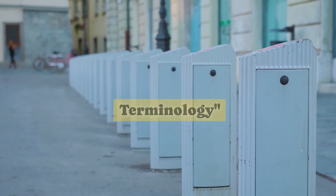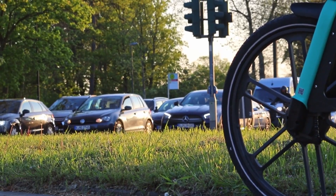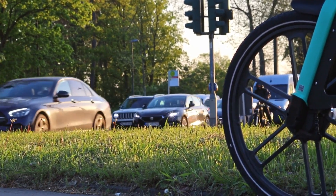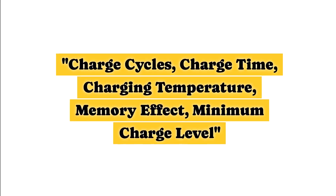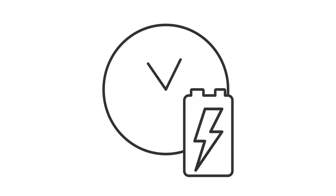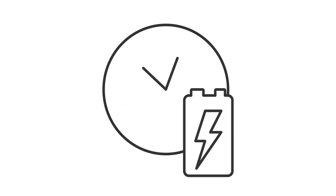Let's explore some charging and maintenance terminology to keep your e-bike in top condition. Understanding terms like charge cycles, charge time, charging temperature, memory effect, and minimum charge level ensures proper battery maintenance and longevity.